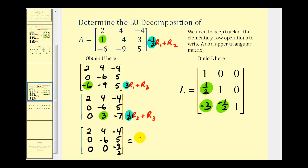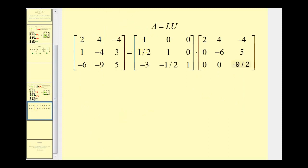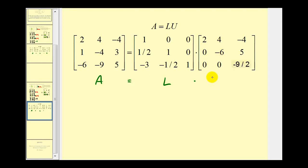So here's our upper triangular matrix and here's our lower triangular matrix for our LU decomposition. Putting the pieces together, A equals L times U: A is the given matrix, L was our lower triangular matrix built using the shortcut, and U was the upper triangular matrix found by performing row operations.